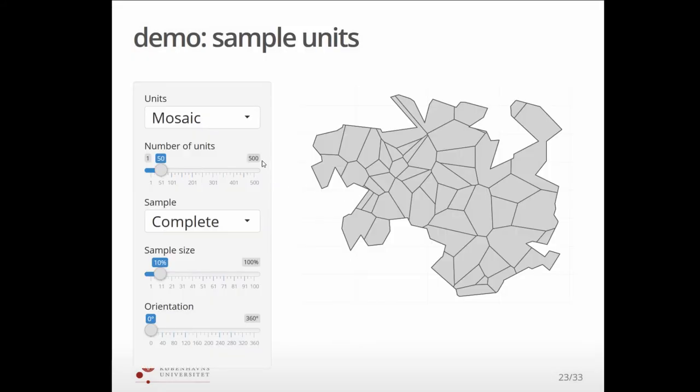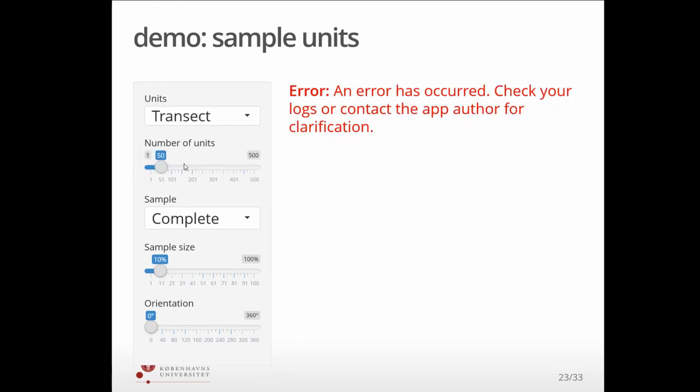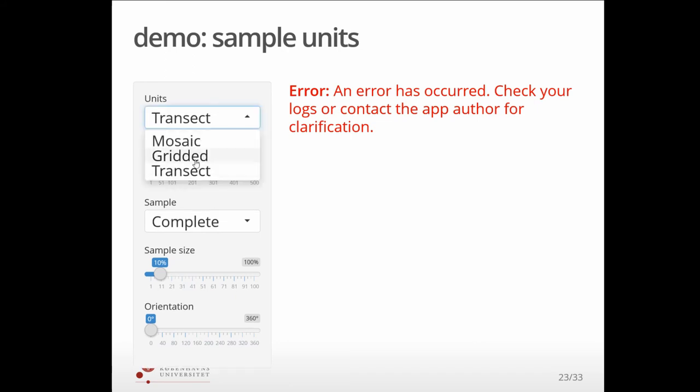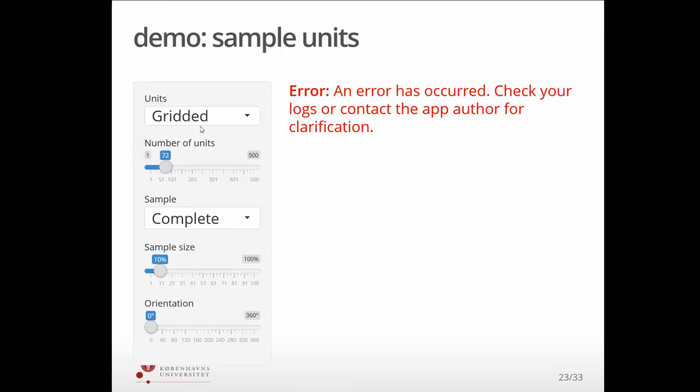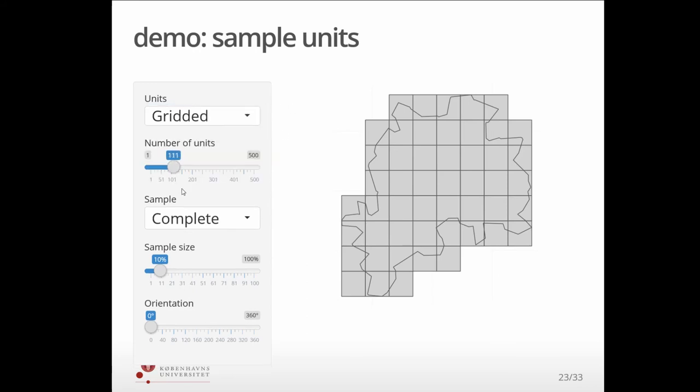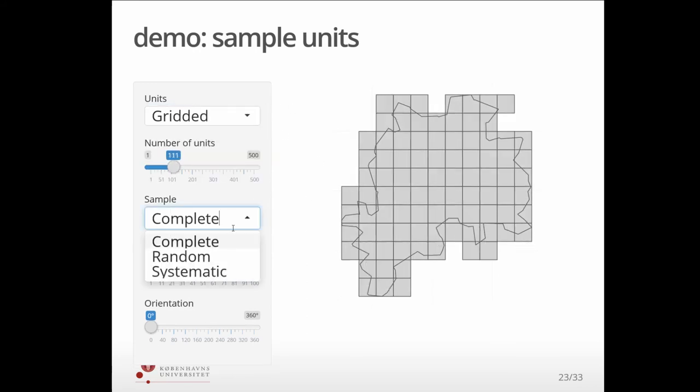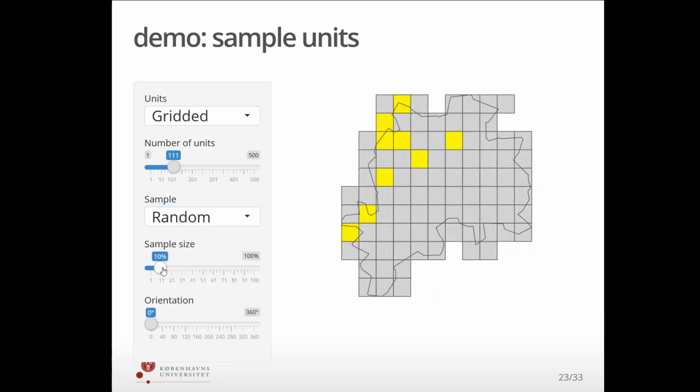Then we have various ways of dividing up the area, modeling our sample frame. So mosaics like a field system or transects, grids—change your number. Maybe you don't sample all of them, you do a random sample of 50%, etc.